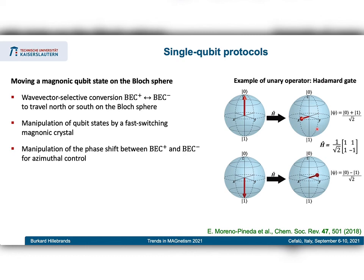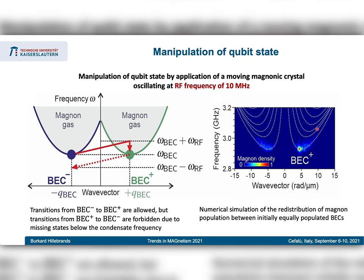Another method for qubit manipulation: if we drive the magnonic crystal at a very low RF frequency of 10 MHz, we can shift the frequency of the blue magnons slightly up, allowing them to relax into the green magnons. The reverse — shifting frequency down — is forbidden because there are no states there. So this provides a pumping mechanism to transfer magnons from the blue states into the green states, but not vice versa. The computer simulation shows this realization works very nicely.